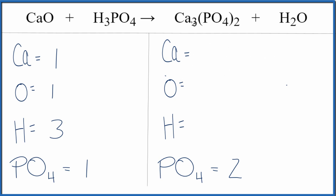On the product side, I have three calciums, one oxygen, and two hydrogens. When I have water in a chemical equation, I like to leave that last, balancing those hydrogens and oxygens.